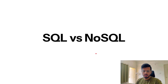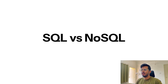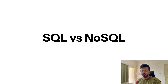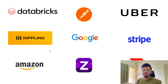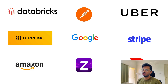The first topic is SQL versus NoSQL. If you are appearing for a system design interview, there is a likely chance you will be questioned while creating a DB schema or discussing what DB you are using. Even in fresher hiring, managers generally ask this. I have given interviews at Databricks, Postman, Uber, Rippling, and Google — each company asked me this question.